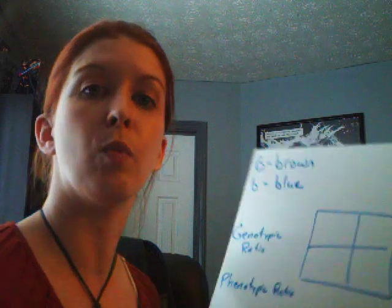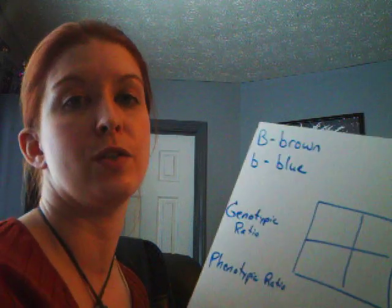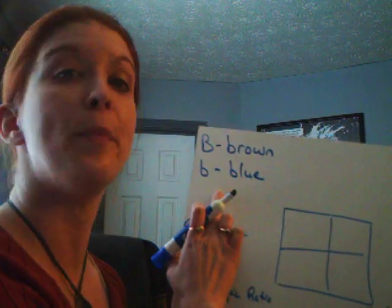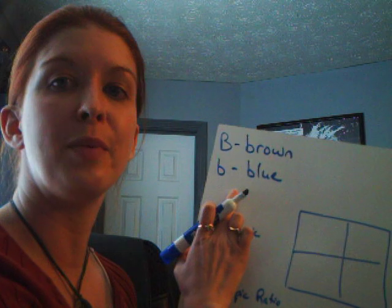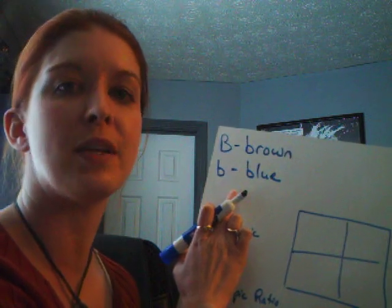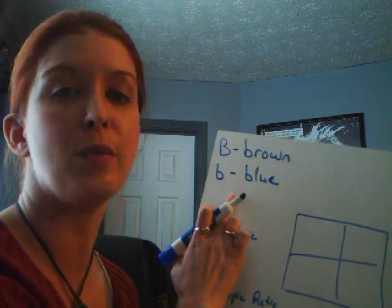Hey everybody. Now let's do some Punnett squares. When I do a Punnett square, the first thing I always do is write out exactly what each allele codes for. So what I've chosen to do today is eye color. A big B stands for brown eyes and a little b stands for blue eyes.